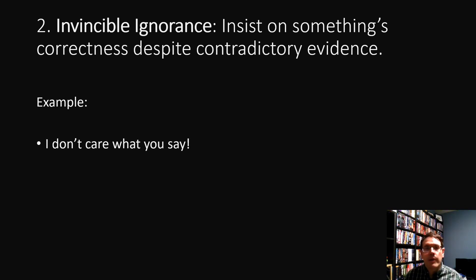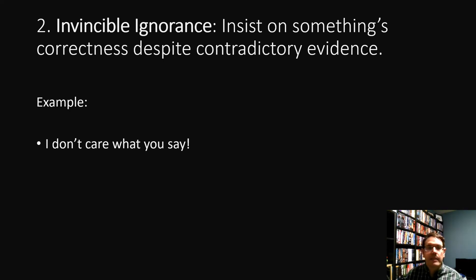The next moral fallacy is called invincible ignorance. This is where someone insists on something being true even though there's evidence to the contrary — in other words, they're totally ignoring evidence which would show that they're wrong. Imagine when someone says 'I don't care what you say.' When they say that, they're indicating that no amount of evidence could ever change their mind. In other words, if they're ignorant, their ignorance is invincible — nothing can affect it.